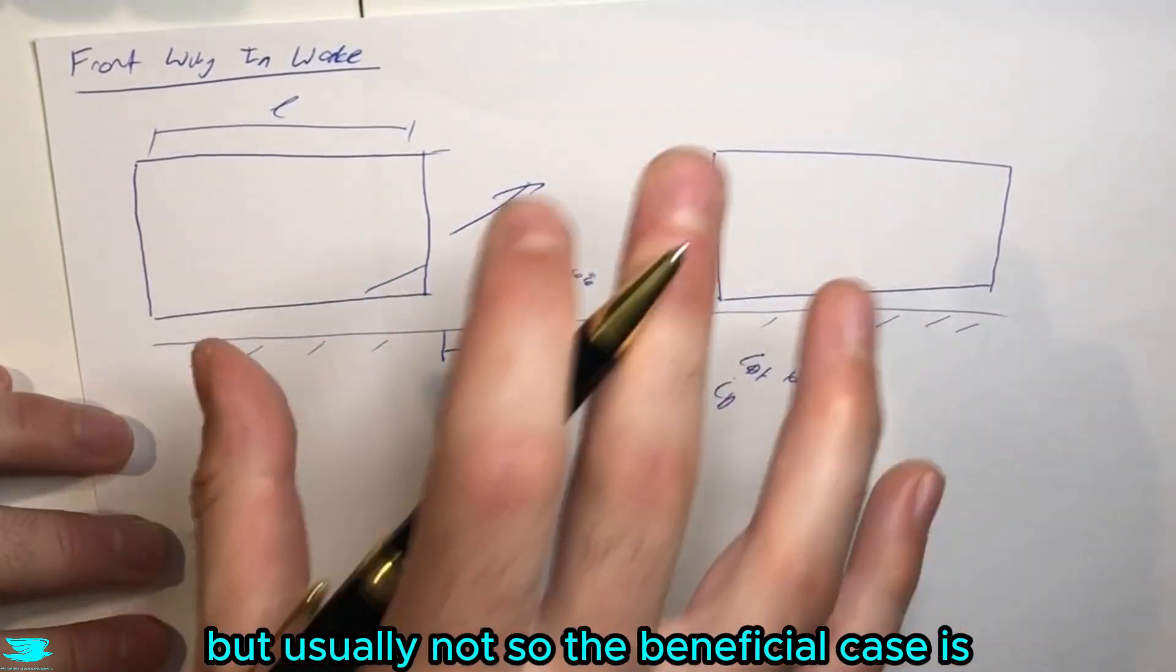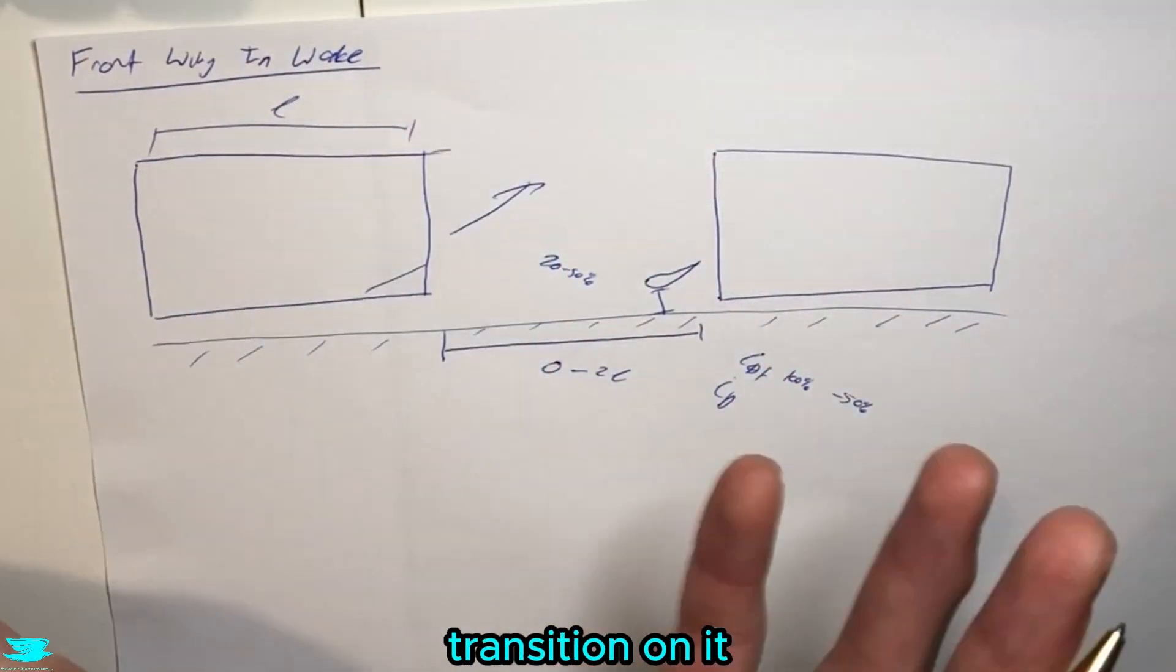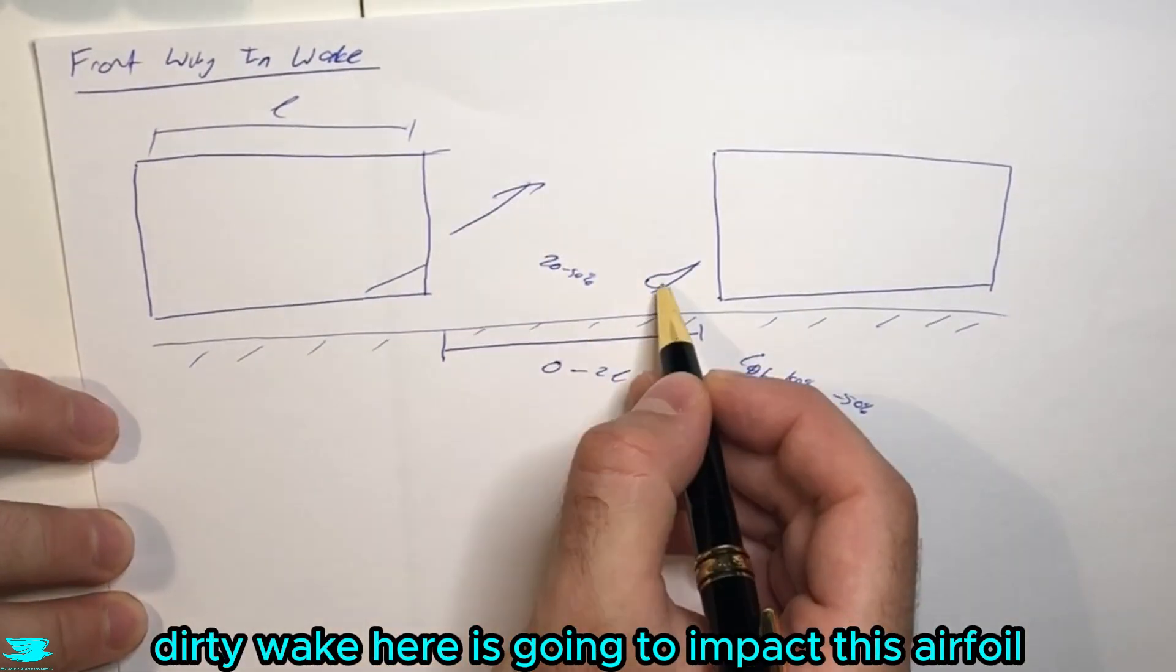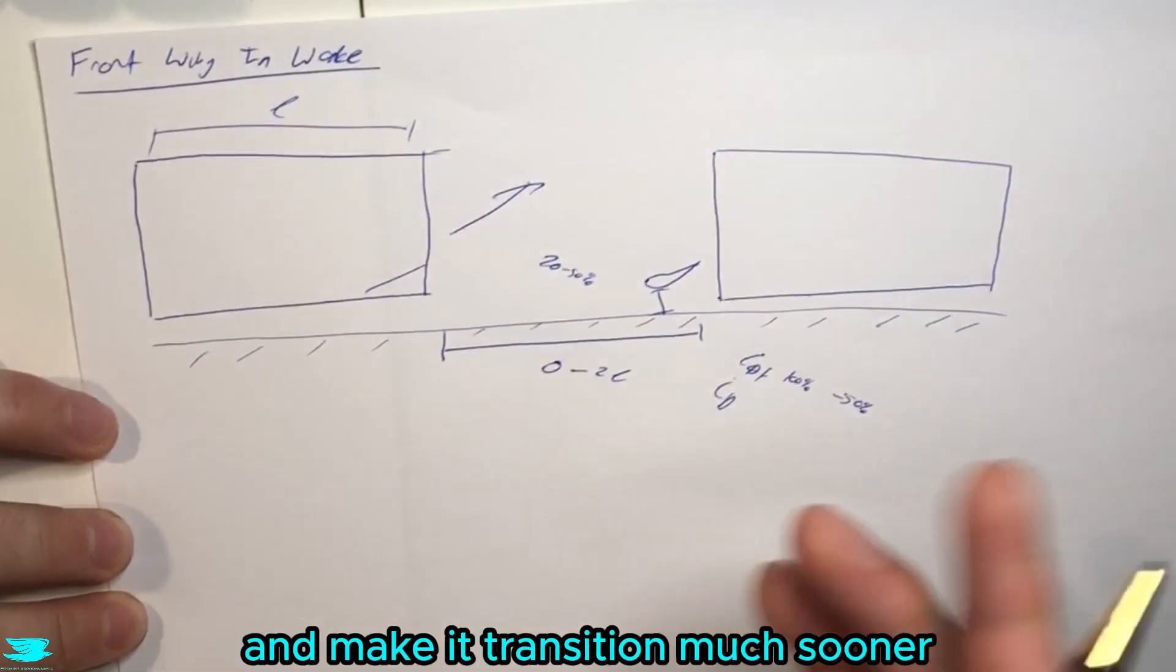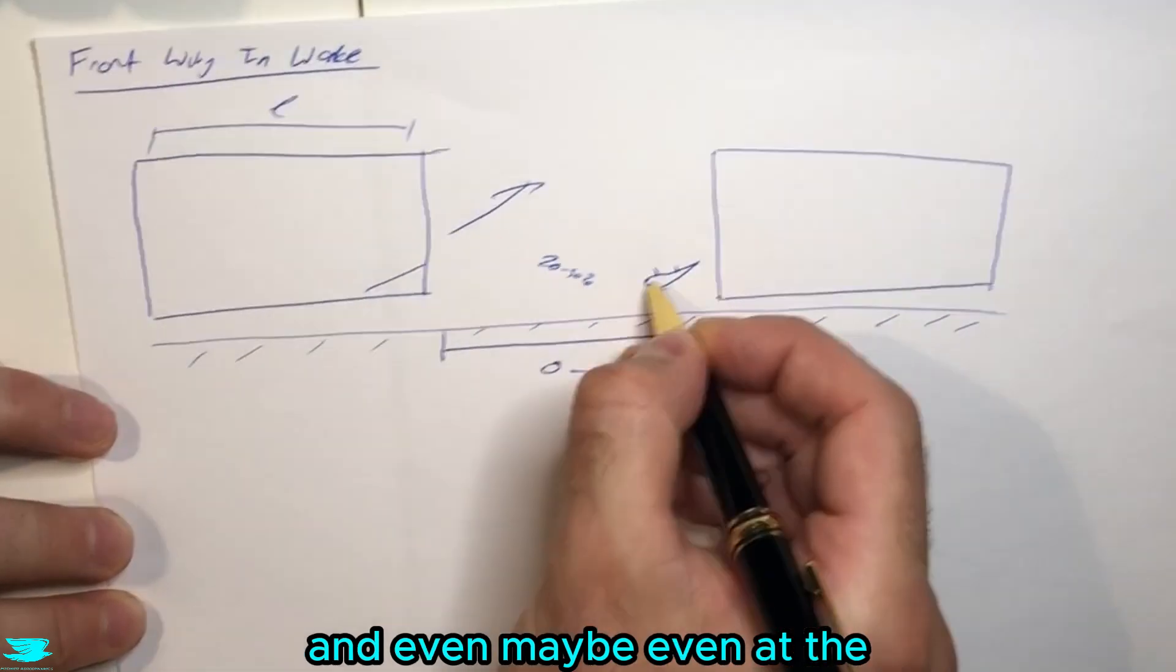The beneficial case is, let's say you have this front wing and there's some kind of laminar turbulent transition on it, but you want to accelerate that transition. Well, the dirty wake here is going to impact this airfoil and make it transition much sooner, so instead of maybe here it might be here and even maybe at the leading edge if it's very dirty.